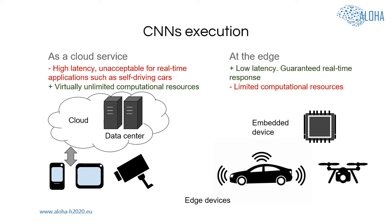Due to their high complexity, state-of-the-art convolutional neural networks are typically executed on high-performance platforms and provided to edge devices such as mobile phones, tablets or cameras as cloud services. However, some applications require execution of CNNs right on the edge devices. One of the main reasons for execution at the edge is high latency, occurring due to communication of the device with the server in the case of cloud applications. Low latency is unacceptable for CNN-based applications that require real-time response, such as those running in self-driving cars or drones.